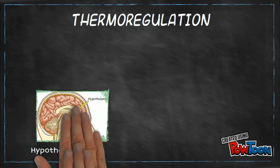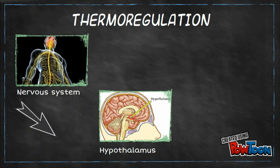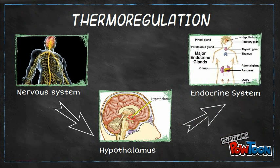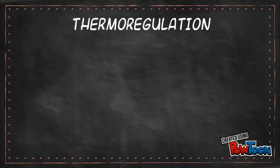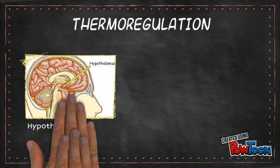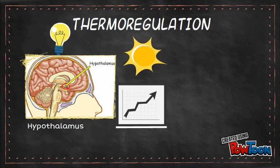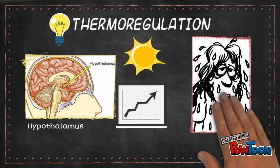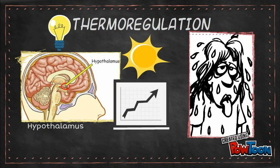The hypothalamus links the nervous system, where the receptors are, to the endocrine system — a collection of hormone-secreting glands. If the hypothalamus detects an increase in temperature, it would signal certain glands in the body to secrete sweat, which would in turn cause heat loss due to evaporation.